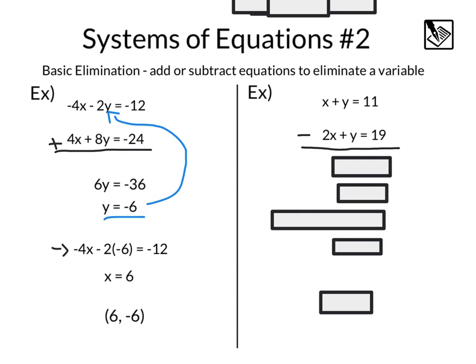So when I subtract this equation, it's actually going to reverse all of my signs because that minus sign, that negative, would distribute. So we've got x minus 2x would give us a negative x. Positive y minus y, those would cancel out. And 11 minus 19 would give us equals negative 8. Solving for that, we'll get x equals 8.